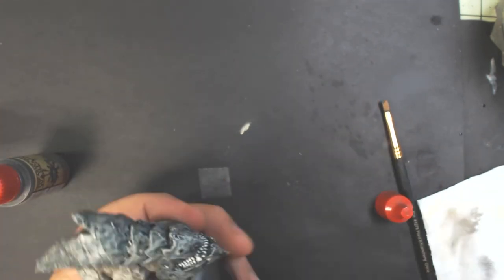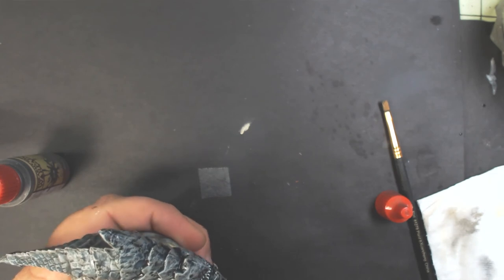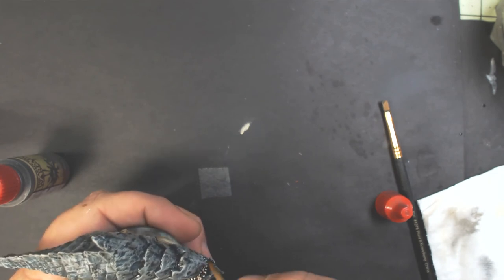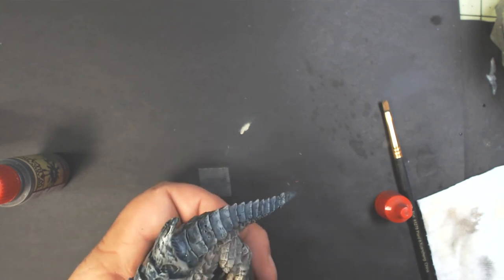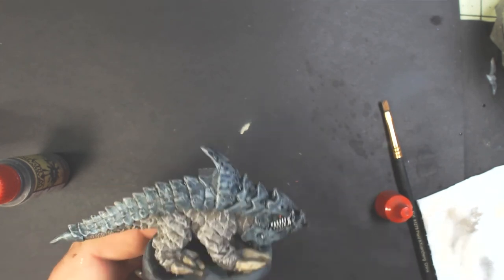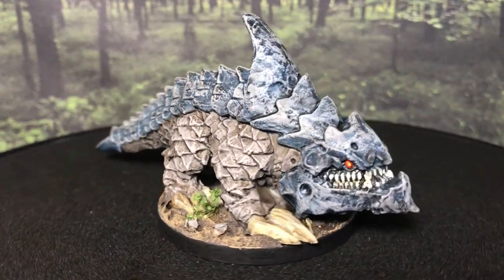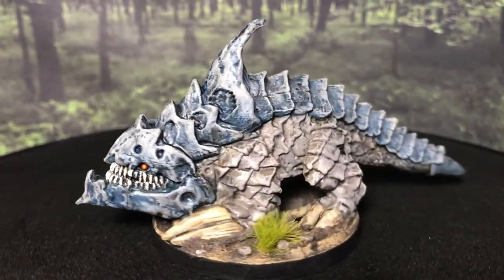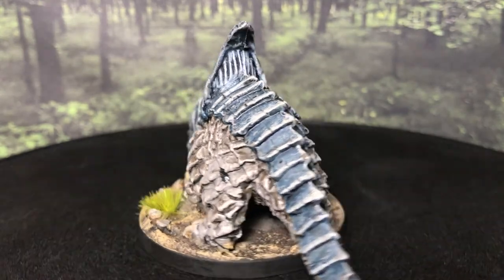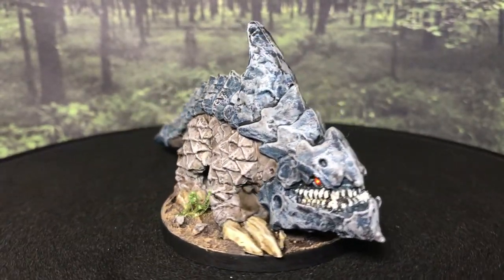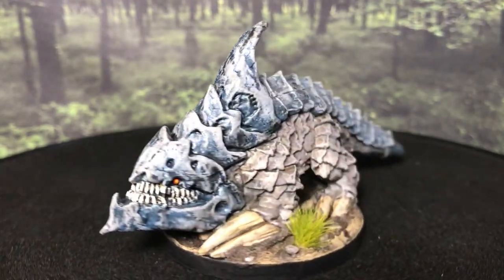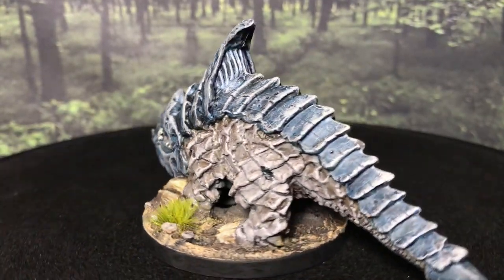All right. Now we're going back with some Army Painter Light Tone and painting the teeth. And there you have it. I didn't show going back over with the second wash on the blue part, but you can just use your dark wash again.